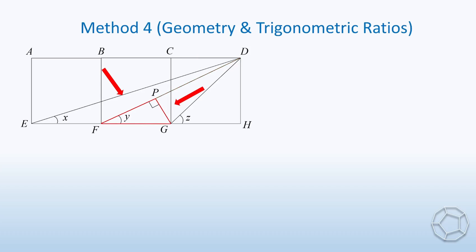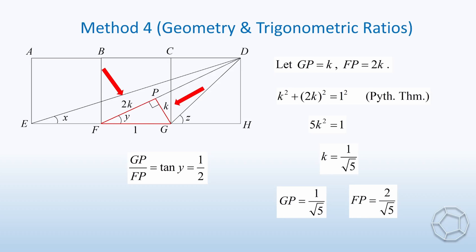For the time being, we focus on the red triangle GPF. GP over FP is equal to tangent y, which is equal to 1 over 2. So, let GP equals to k, and FP equals to 2k. With all the three sides, we can use Pythagoras theorem. Therefore, k squared plus 2k whole squared is equal to 1 squared. Solving it, we have k is equal to 1 over square root 5. That is, GP is equal to 1 over square root 5, and FP is equal to 2 over square root 5.